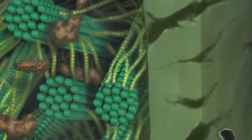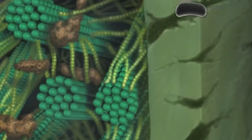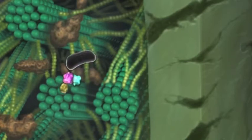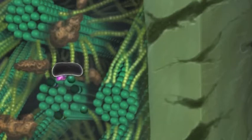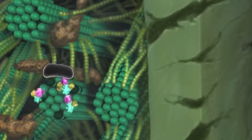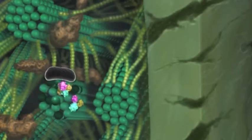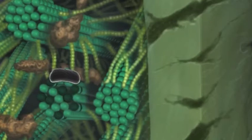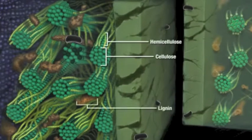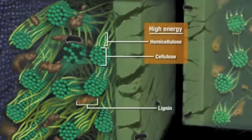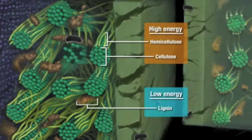During leaf decomposition, microbes break through the leaf cuticle and traverse to the cell wall. Microbes find food by releasing enzymes that break down complex compounds like cellulose into simpler ones such as glucose. An increase in the concentration of these simple compounds signals microbes to produce more enzymes. The three main structural components that microbes break down are cellulose, hemicellulose, and lignin. Microbes attack the high-energy foods cellulose and hemicellulose first, while lignin is a low-energy food that encases cellulose and hemicellulose.